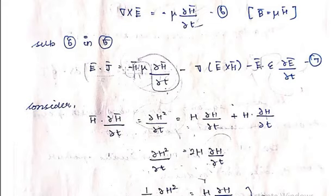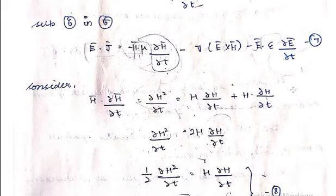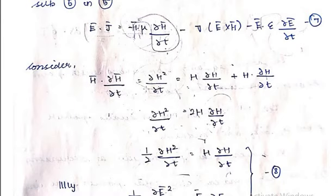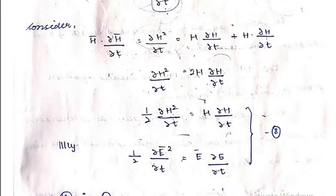The equation becomes: E · J = −H · μ(∂H/∂t) − ∇ · (E × H) − E · ε(∂E/∂t). Now, H · ∂H/∂t can be written as (1/2) ∂H²/∂t, since ∂H²/∂t = 2H · ∂H/∂t, giving H · ∂H/∂t = (1/2) ∂H²/∂t. Similarly, E · ∂E/∂t = (1/2) ∂E²/∂t. Substitute these two identities into the equation.